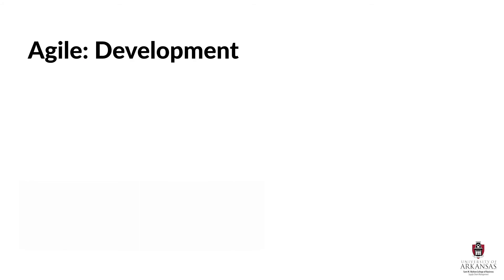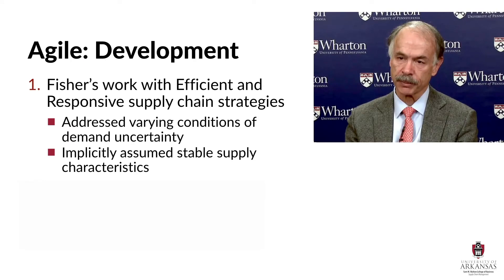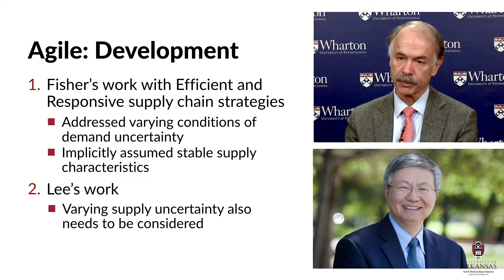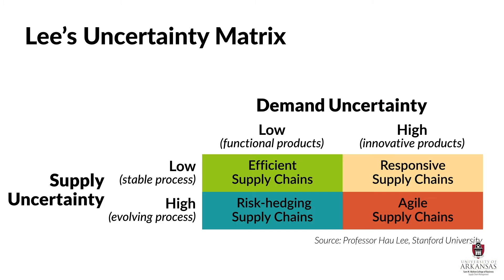The concept of supply chain agility builds on Fisher's original work with efficient and responsive supply chain strategies. Those strategies dealt with varying degrees of demand uncertainty. But then Dr. Hao Li proposed that we also need to consider varying degrees of supply uncertainty. Professor Li proposed an uncertainty matrix that determines supply chain strategy based on the level of supply and demand uncertainty. For this lesson, we're going to focus on an agile supply chain strategy, which should be used when both supply and demand uncertainty are high. Professor Li suggested that an agile strategy should be combined with the best of risk hedging and responsive approaches, because risk hedging addresses supply uncertainty and responsiveness addresses demand uncertainty.